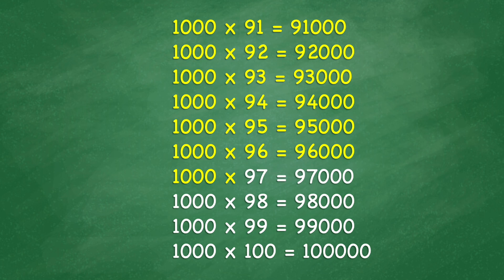1,000 x 97 equals 97,000. 1,000 x 98 equals 98,000. 1,000 x 99 equals 99,000. 1,000 x 100 equals 100,000.